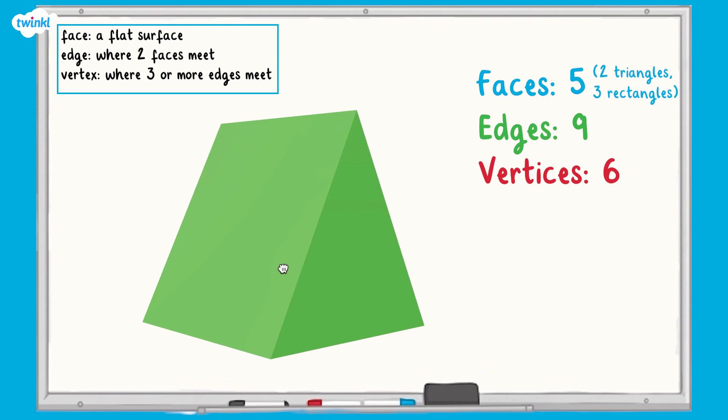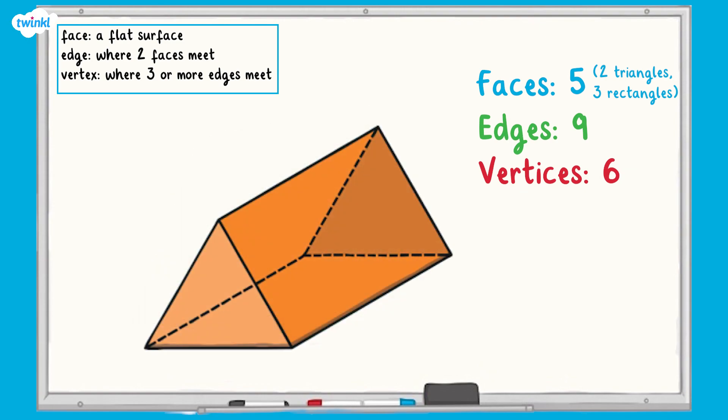When we can move the 3D shape around like this, we can check that we've counted them all. But if we're using a 2D representation of a 3D shape, we need to be able to imagine the shape in our head to visualize each face, edge and vertex. We can also mark them off to help us.